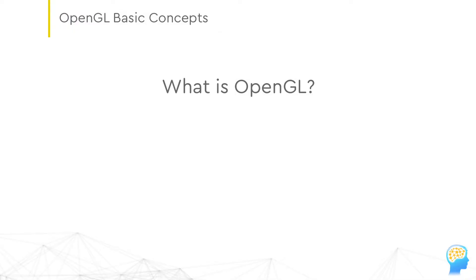What exactly is OpenGL and how can we use it? First of all, it's an API — a set of callable C functions. It's a state machine and it follows the client-server model.